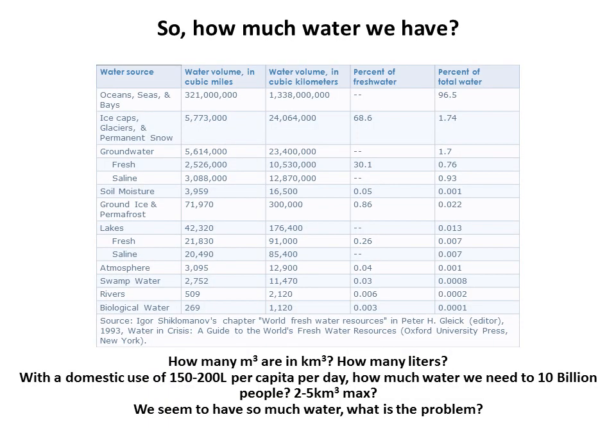Let's switch gears and see how much water we have — whether we have a problem with the amount of water available. It turns out we have about 1.4 billion cubic kilometers of water. A cubic kilometer contains 1,000 meters × 1,000 meters × 1,000 meters, which equals 1 billion cubic meters — that's 1 billion tons of water, or 10 to the 12 liters. This is a lot of water.